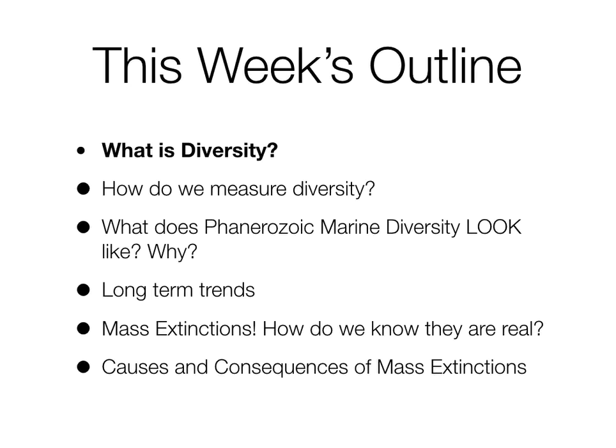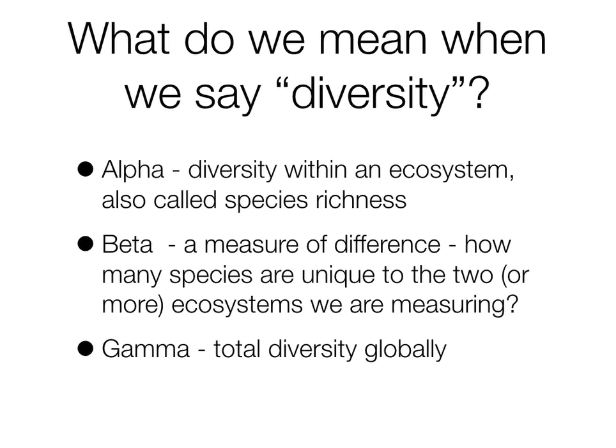It turns out there are actually a lot of different ways to think and talk about diversity. The first is alpha diversity, which is diversity within a single ecosystem — also often called species richness. Gamma diversity is total global diversity, which is probably what most people think of first. There's also beta diversity, which is a measure of difference — how many species are unique to two or more ecosystems being measured. All three are useful for understanding trends over time.